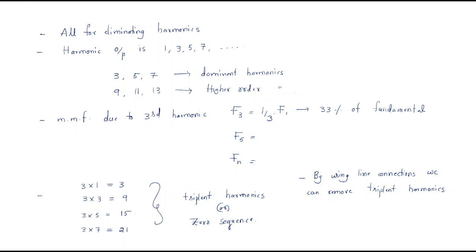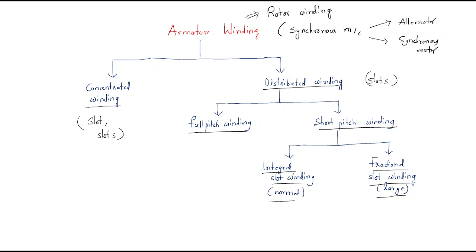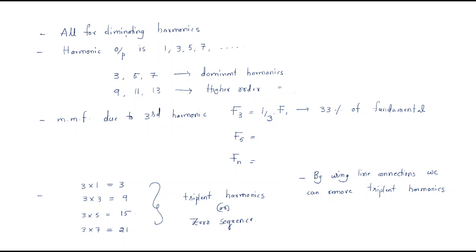Why are we using these different types of windings? The main intention of all armature windings is eliminating harmonics. Harmonics are unwanted frequencies — unwanted frequency waves. Generally, if the required waveform is sinusoidal, the third harmonic has three cycles over the same interval, and the fifth harmonic has five cycles.